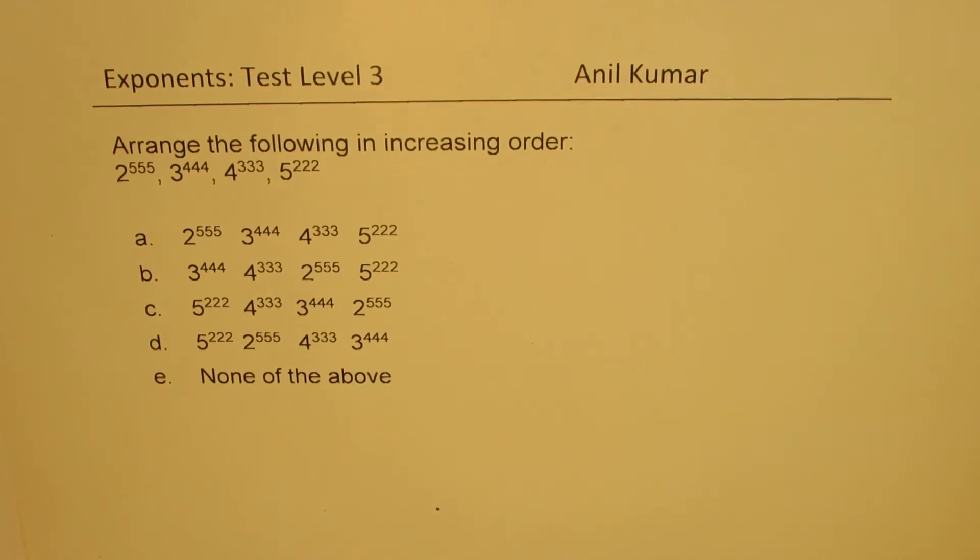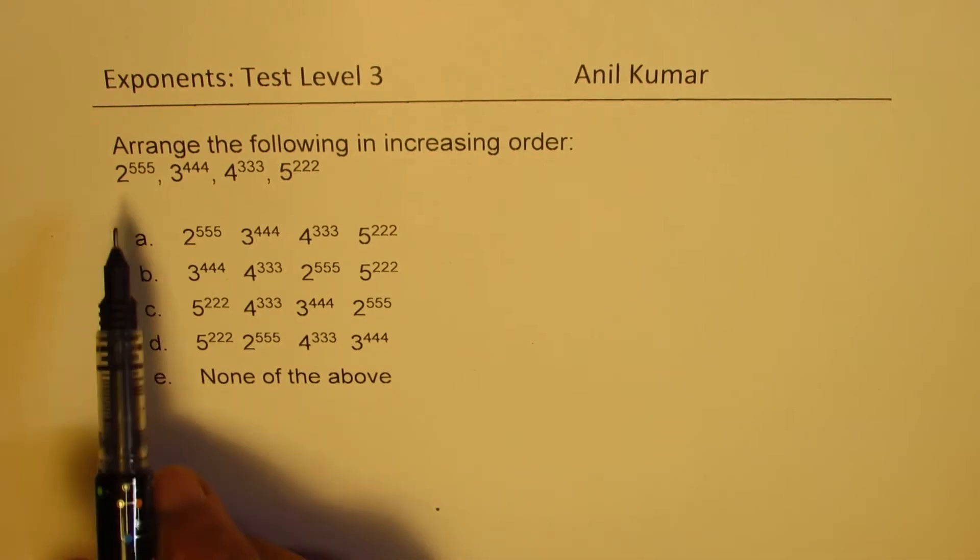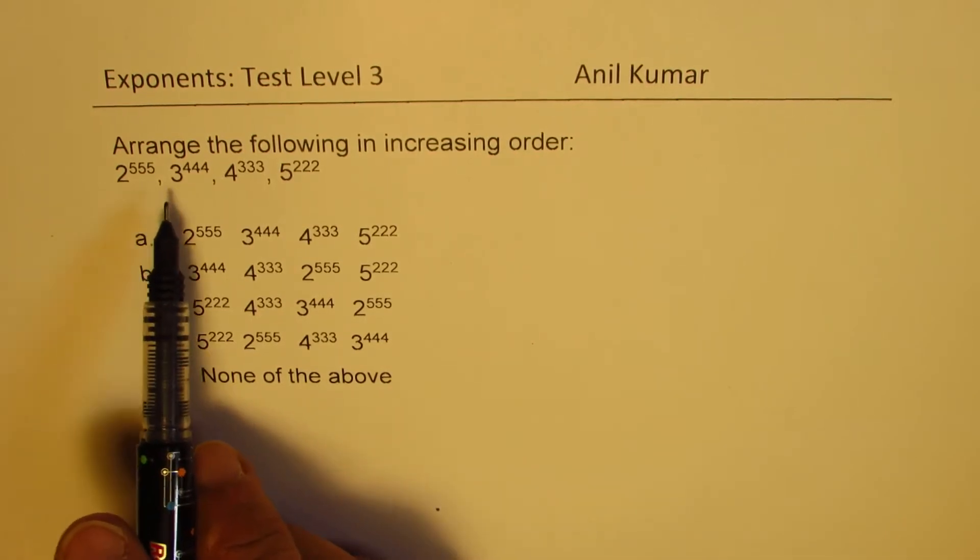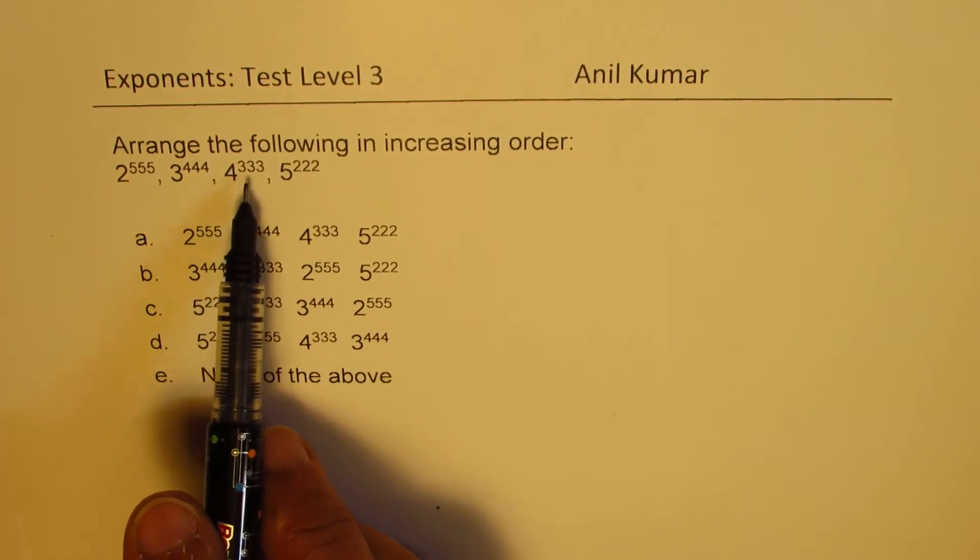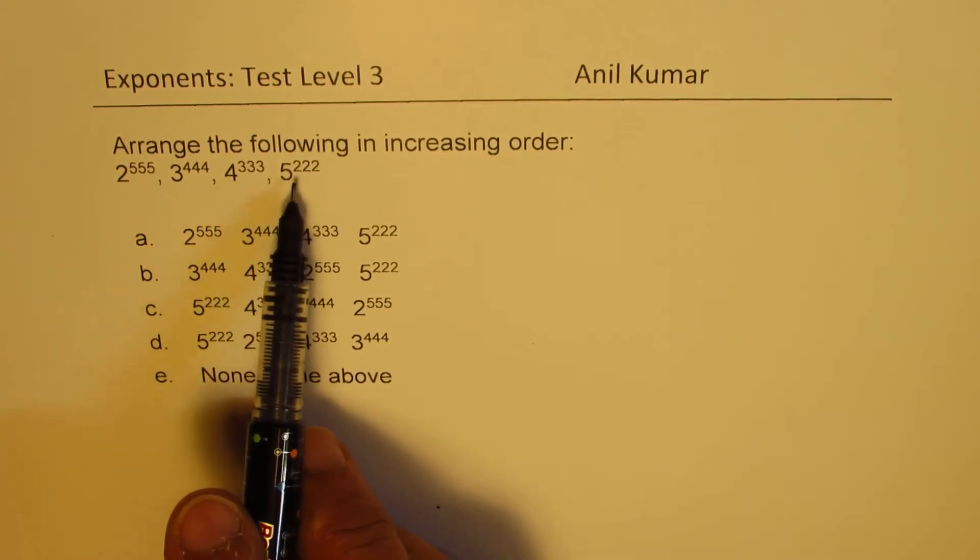I am Anil Kumar sharing with you a difficult question on exponents. The question here is, arrange the following in increasing order: 2 to the power of 555, 3 to the power of 444, 4 to the power of 333, and 5 to the power of 222.